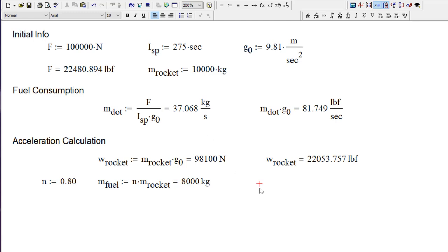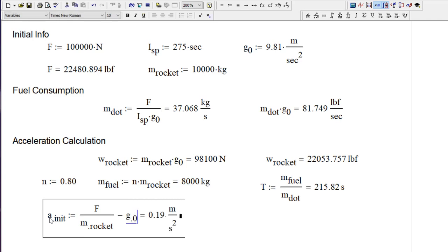How long is this engine going to run given what we've got here? So t will be the time that the engine runs, mass of the fuel divided by m dot. This engine will run for 215, almost 216 seconds. Well is that enough? Let's try this. The initial acceleration of the rocket is going to be the force made by the engine divided by the mass of the rocket, except now we have to subtract out the acceleration of gravity. 0.19 meters per second squared. That's nothing. That's not enough. That means the rocket will just barely come off the launch pad.